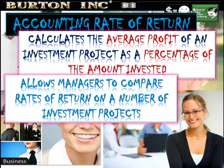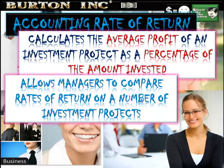Our second method of investment appraisal is called the accounting rate of return. This calculates the average profit of an investment project as a percentage of the amount invested, allowing managers to compare rates of return on a number of investment projects. So we're looking at return on our investment as a percentage — for example, if we invest $1 million in capital equipment, what percentage return in profit is this going to generate for the firm?